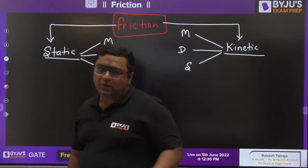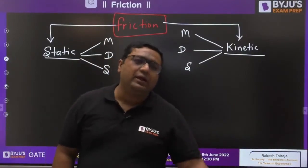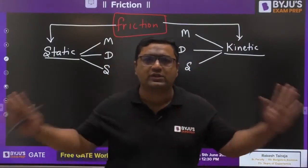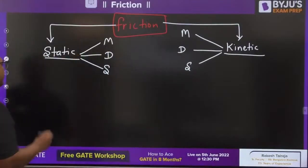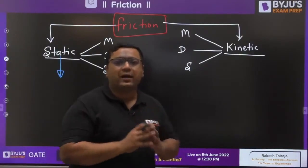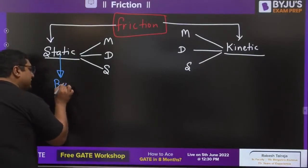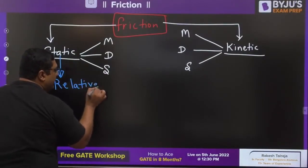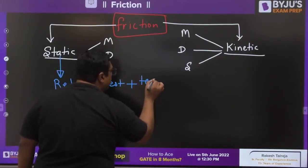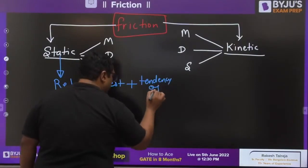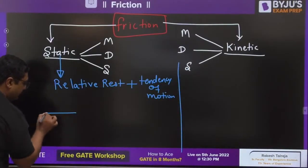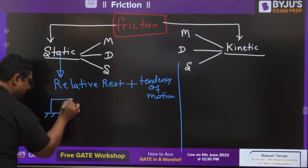First, let us talk about the situation for both types. Then we will enter into the magnitude and direction of both friction forces. Whenever we are talking about the situation — as the name suggests, it is static friction — it acts when two bodies are at relative rest, along with a tendency of motion. I will be telling you what is the meaning of tendency of motion.